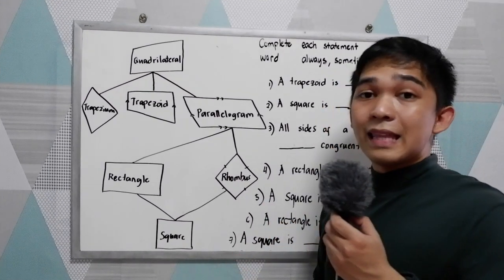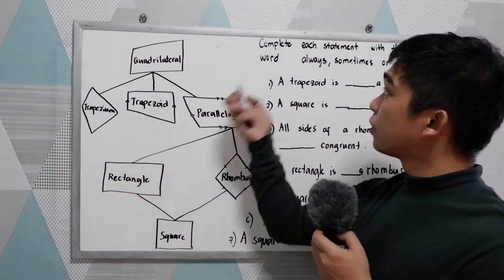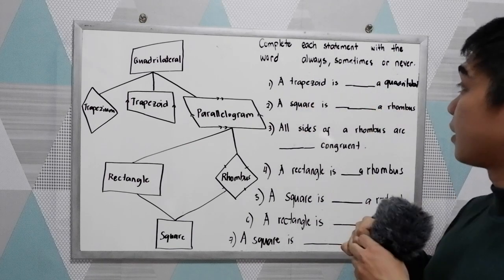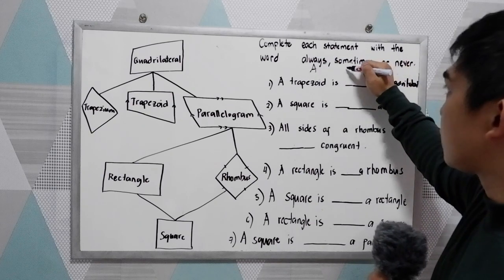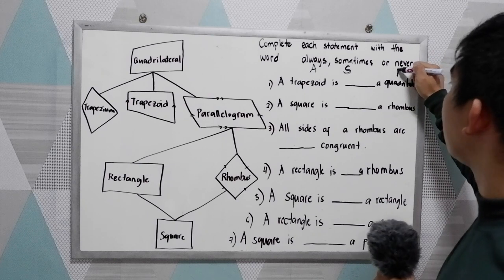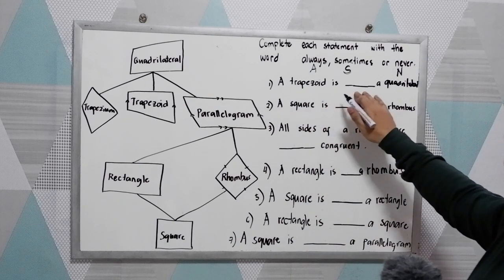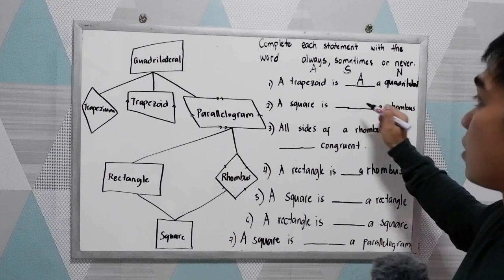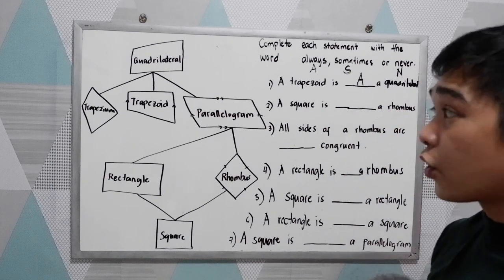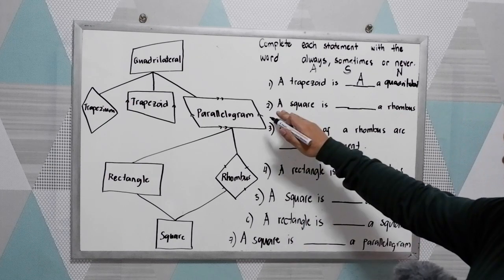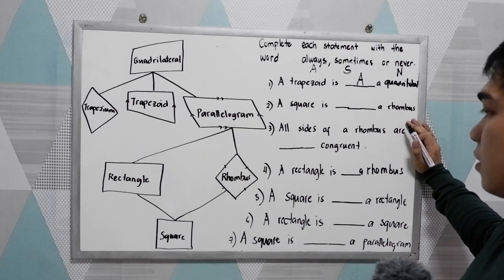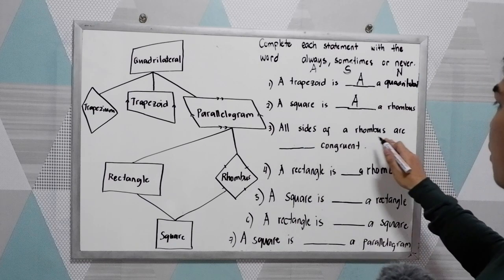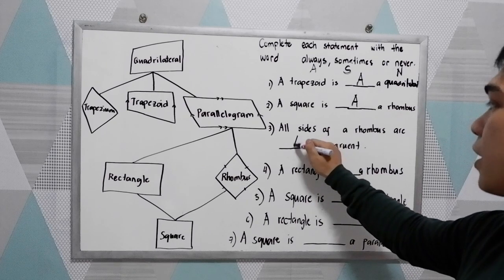Now let us use this schematic diagram to answer these problems. Complete each statement with the word always, sometimes, or never — using capital A, S, or N. A trapezoid is always a quadrilateral, because a trapezoid has four sides. A square is always a rhombus. All sides of a rhombus are always congruent.